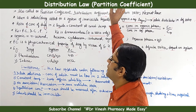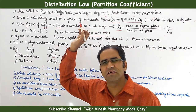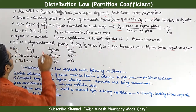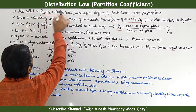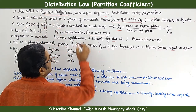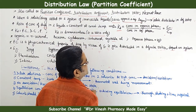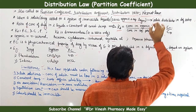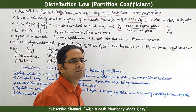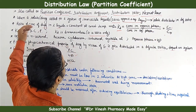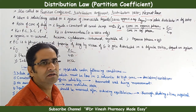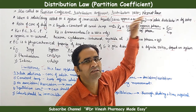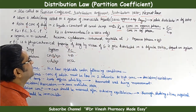Distribution law has several synonyms. It is also known as partition coefficient, distribution coefficient, distribution ratio, and Nernst's law. Nernst is the name of the scientist who devoted himself to finding this out. All these terms have the same meaning, so please don't get confused.